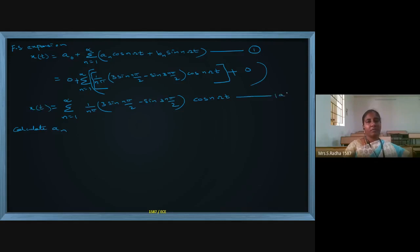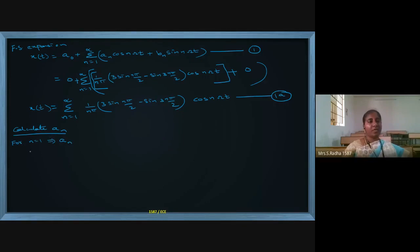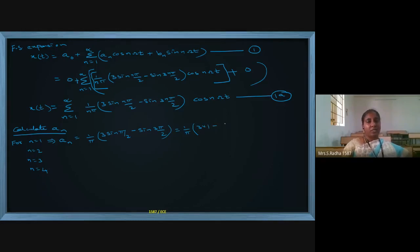Now I calculate aₙ for individual values. The summation limits are n = 1 to infinity. For n = 1: a₁ = (1/π)[3 sin(π/2) − sin(3π/2)] = (1/π)[3×1 − (−1)] = (1/π)(4) = 4/π.